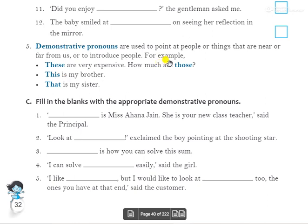For example: 'These are very expensive' — یہ بہت مہنگے ہیں. 'How much are those?' — وہ کتنے کے ہیں. 'This' and 'these' are for nearby things, 'that' and 'those' are for far things. For example: 'This is my brother' — یہ میرا بھائی ہے — meaning he is standing near. 'That is my sister' — meaning she is far.